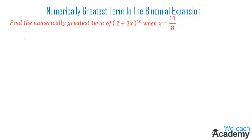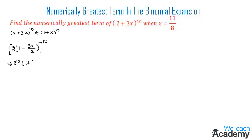The given binomial term is (2 + 3x)^10. Let us write this in the form of (1 + x)^n. Taking 2 as a common factor we get 2 × (1 + 3x/2)^10, which becomes 2^10 × (1 + 3x/2)^10. Comparing with (1 + x)^n, we get x = 3x/2 and n = 10.